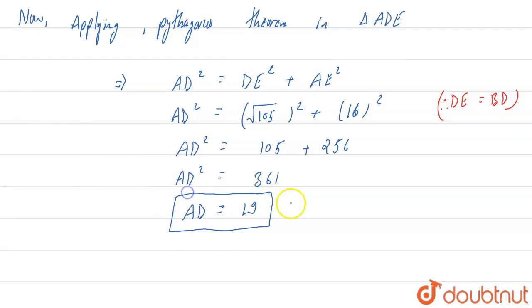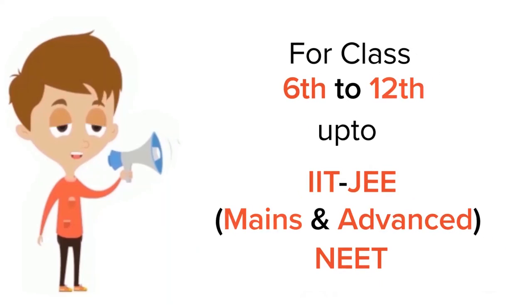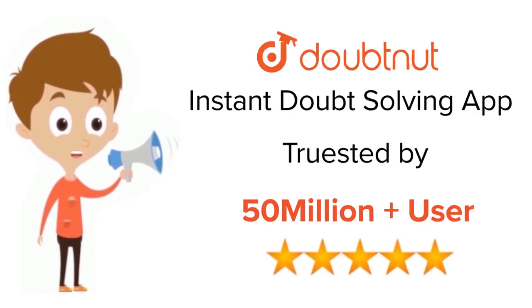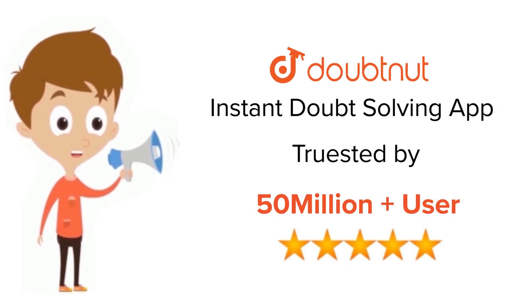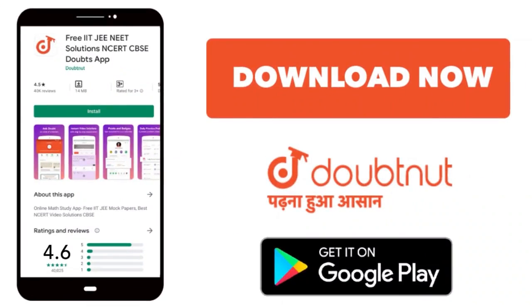Thank you everyone. This is it. For class 6 to 12, IIT JEE and NEET level — trusted by more than 5 crore students — download the DoubtNut app today.